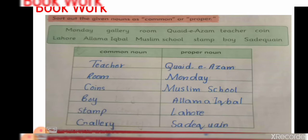Sort out the given nouns as common or proper. The name of everything is called a noun. Common noun is the name of a common person, place, or thing. Proper noun is the specific name of a person, place, or thing.